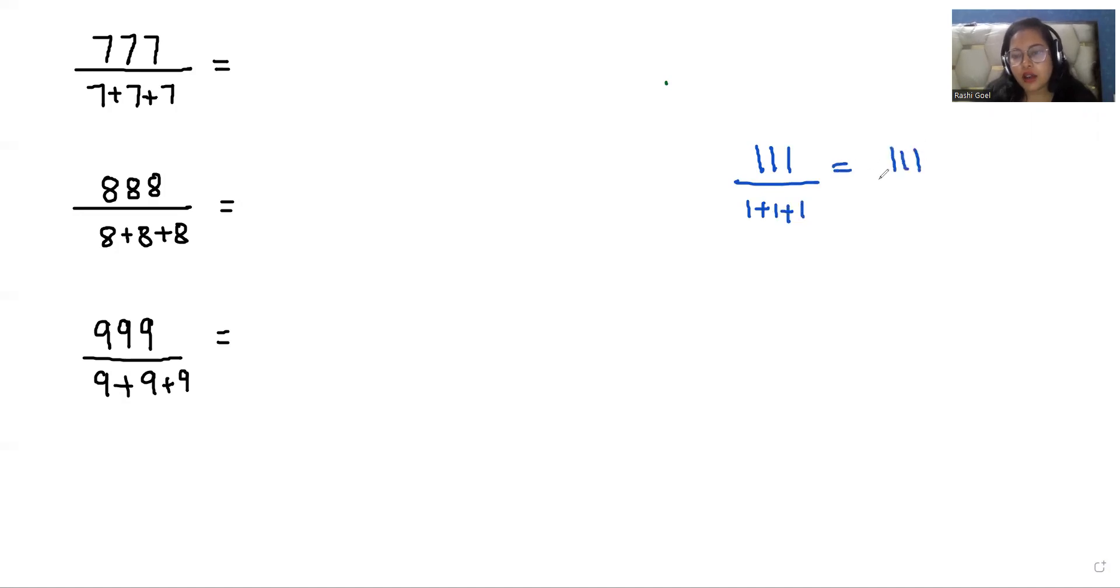111 divided by 1 plus 1 plus 1 is 3, so we get 37.